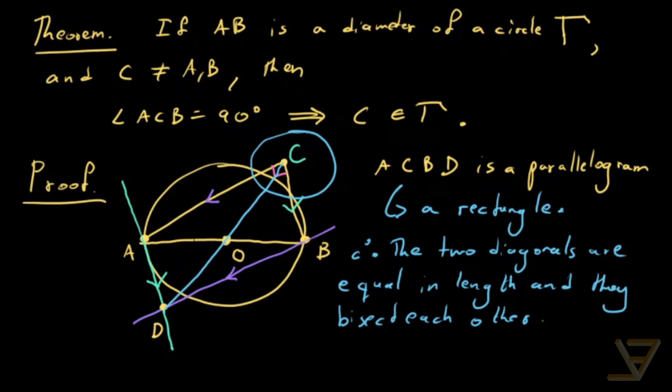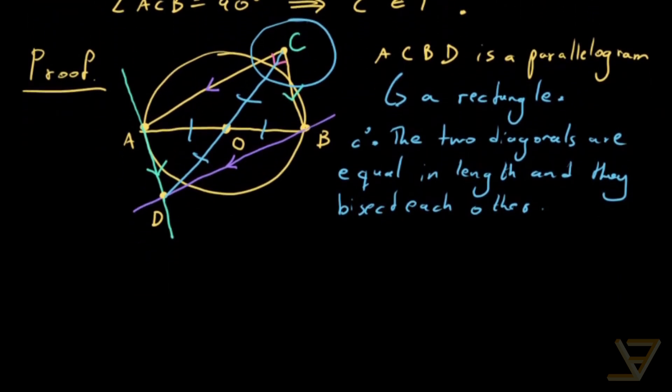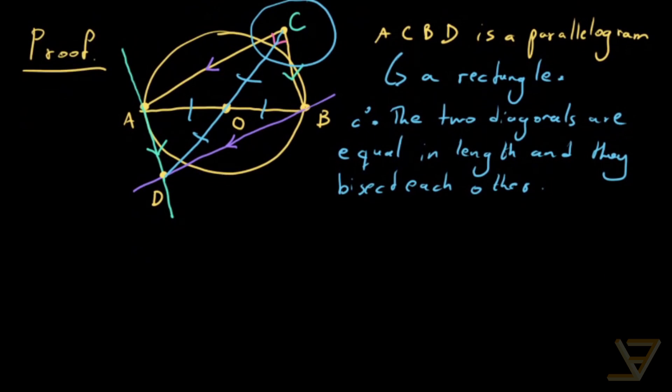So let's draw the other diagonal. What this allows us to conclude is that OC is equal to DC over 2, because the diagonals bisect each other.